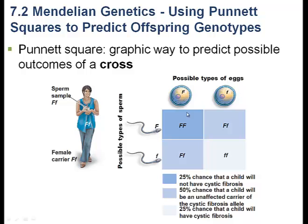When these eggs and sperm meet at reproduction, the Punnett square displays the probabilities of the genotypes in the offspring. If an egg with a dominant allele meets a sperm with a dominant allele, then this individual is completely normal — not a carrier for cystic fibrosis and without cystic fibrosis.